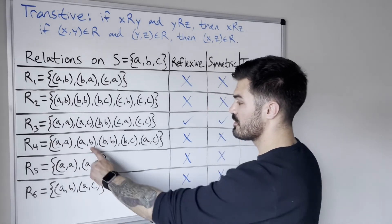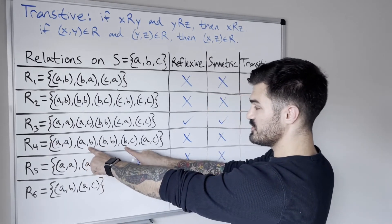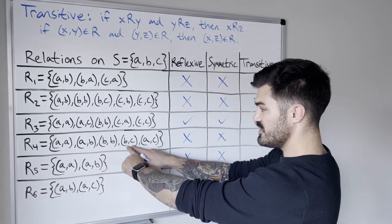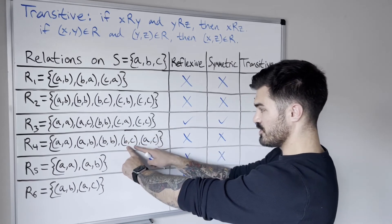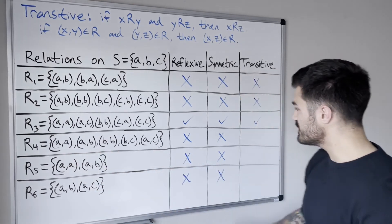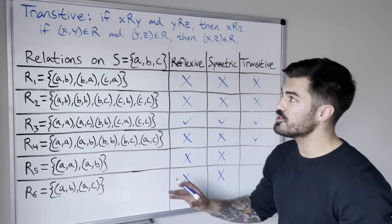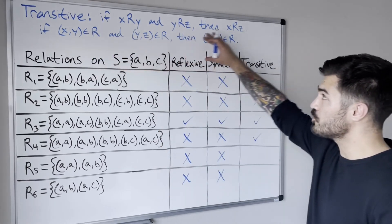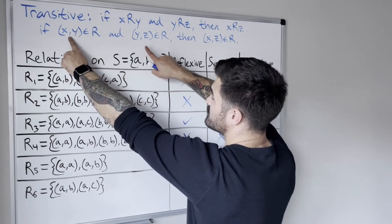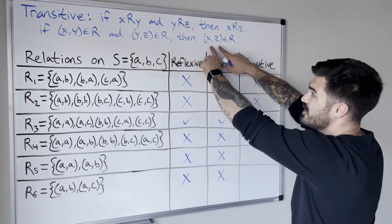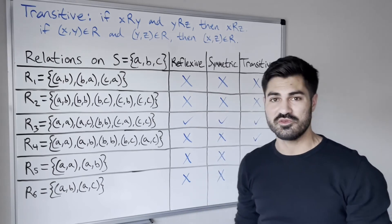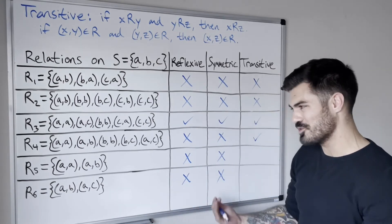Relation four: we have (A,B) and (B,C), so we need (A,C) — which we do have. We have (B,C) but nothing with first coordinate C, so nothing else to check. Relation four is transitive. Relation five: (A,A) and (A,B) — we need (A,B), which we have. Nothing with first coordinate B, so nothing else to check. Relation five is also transitive.